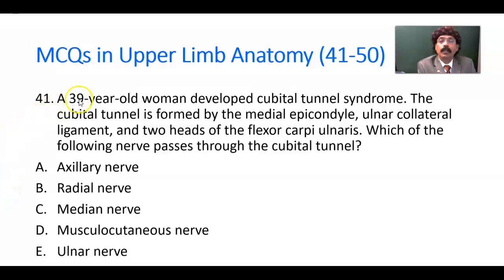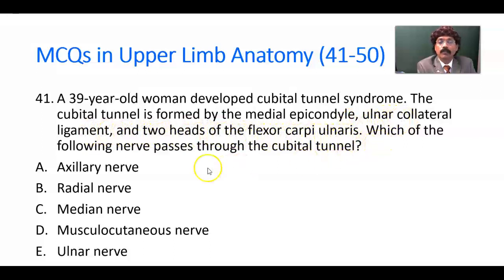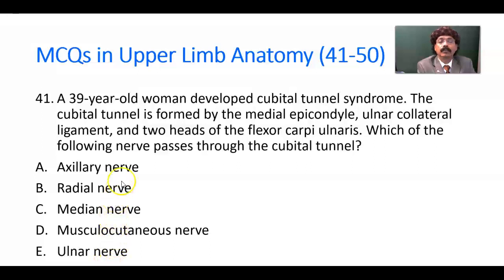Question number 41. A 39-year-old woman developed cubital tunnel syndrome. The cubital tunnel is formed by the medial epicondyle of the humerus, ulnar collateral ligament, and two heads of the flexor carpi ulnaris muscle. Which of the following nerves passes through the cubital tunnel? Options: axillary nerve, radial nerve, median nerve, musculocutaneous nerve, ulnar nerve. Answer: ulnar nerve.